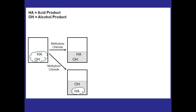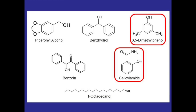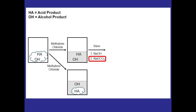Once we've dissolved the two compounds, we can add an aqueous base, which will create a bilayer and ionize the acid, moving it into the aqueous phase and separating it from the alcohol in the organic one. We could use sodium hydroxide or sodium bicarbonate. The concern is deprotonating the unknown alcohol — two of them are phenols with a much lower pKa, at higher risk of being ionized and following the acid into the aqueous layer. So sodium bicarbonate is the better choice.